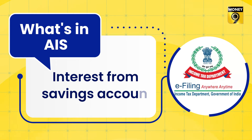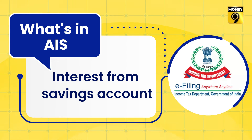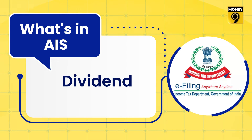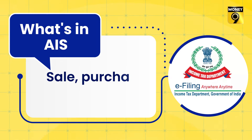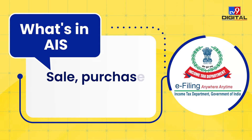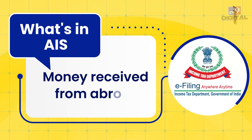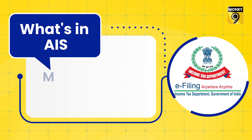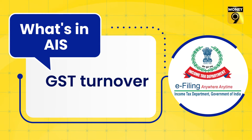Apart from these, AIS also includes information like interest from savings account, dividend, rent, sale and purchase of security, immovable property, money received from abroad, interest on deposit, and GST turnover.